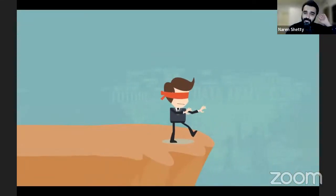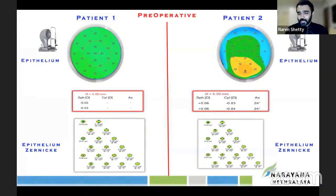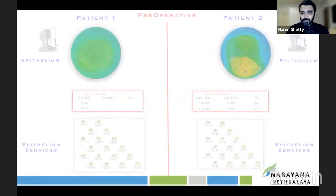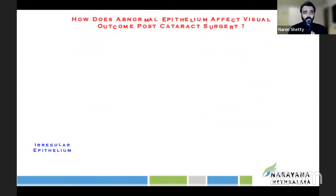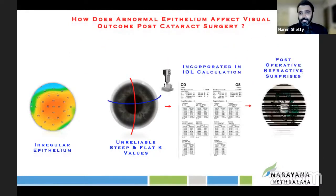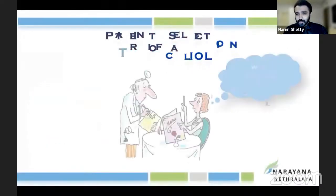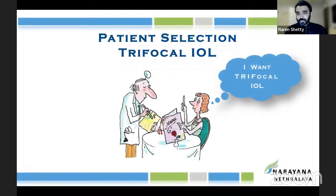If you look closer at patient two and examine the epithelium, there's a lot of irregularity going on, and we need to treat this first before moving ahead. Whenever there is irregular epithelium, the keratometry values you get are very unreliable, and because of this the postoperative outcome will not be great — especially if you're going for a trifocal patient, you will really land in trouble.